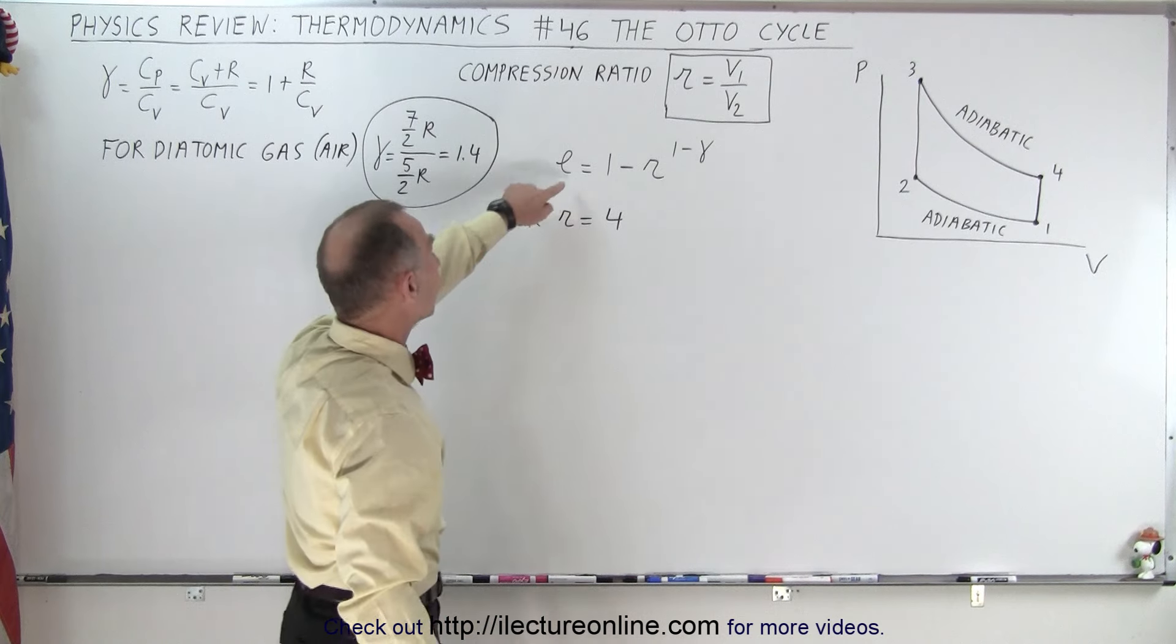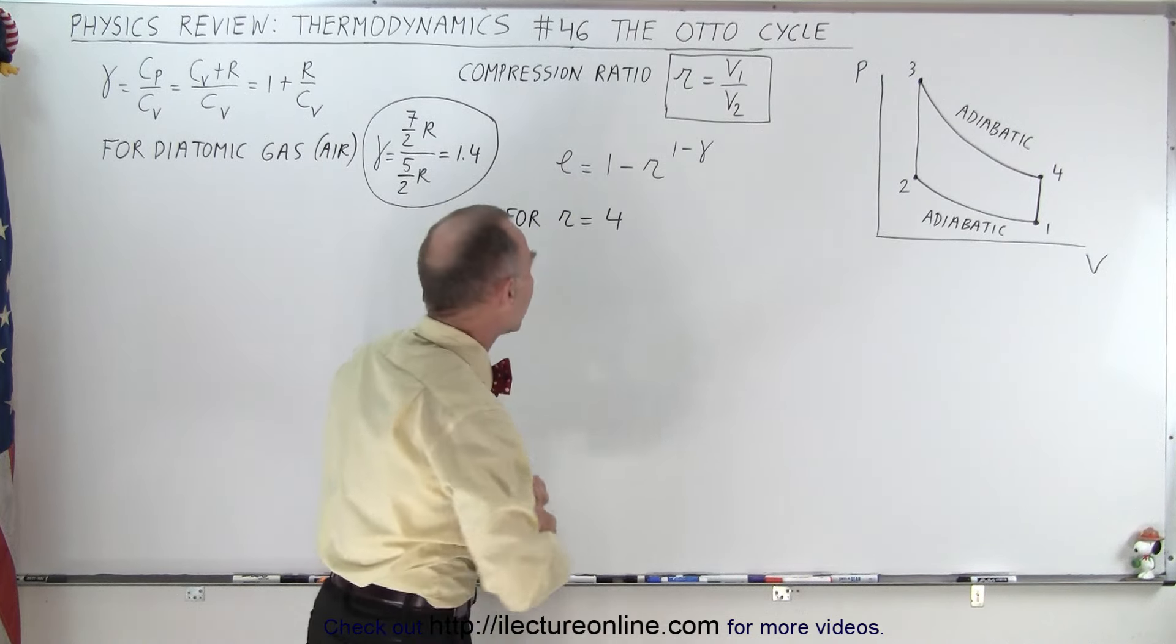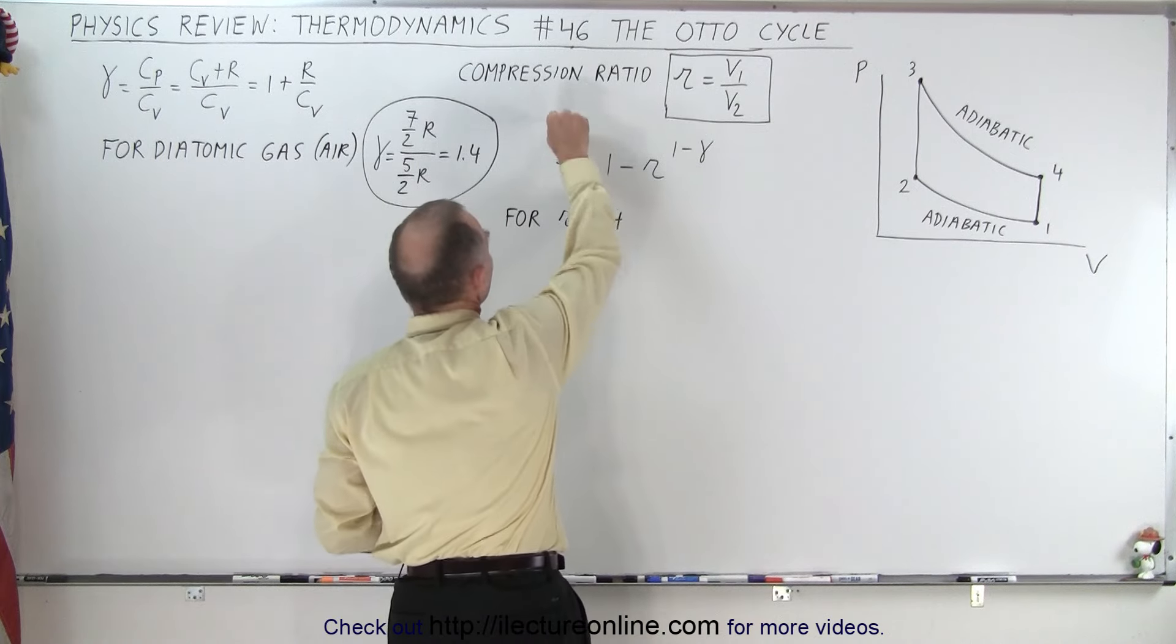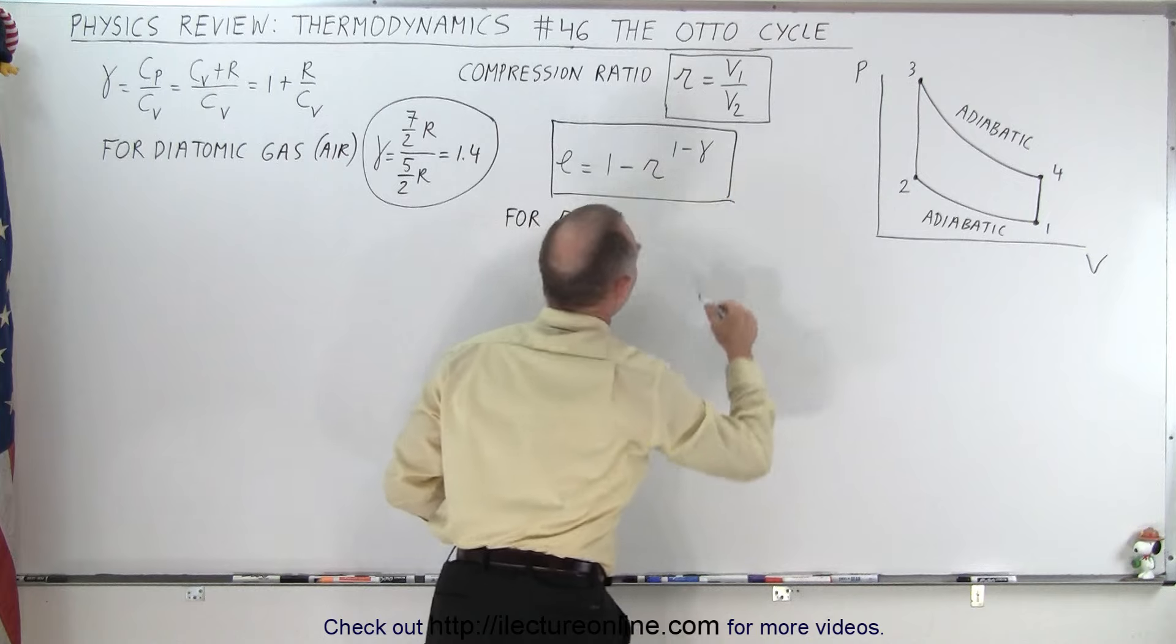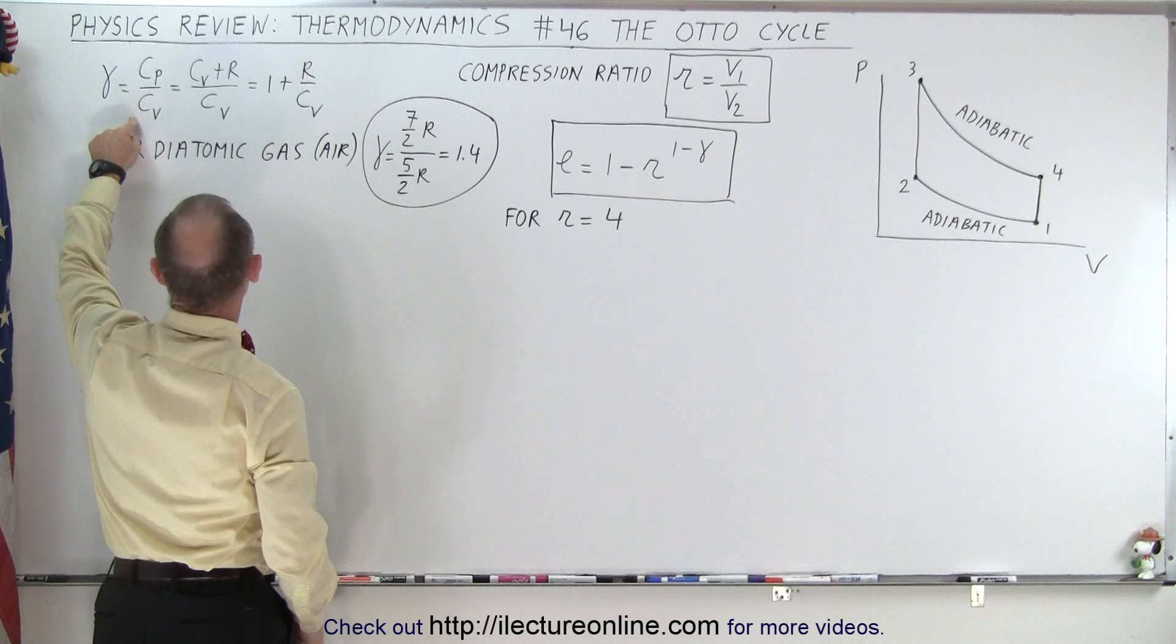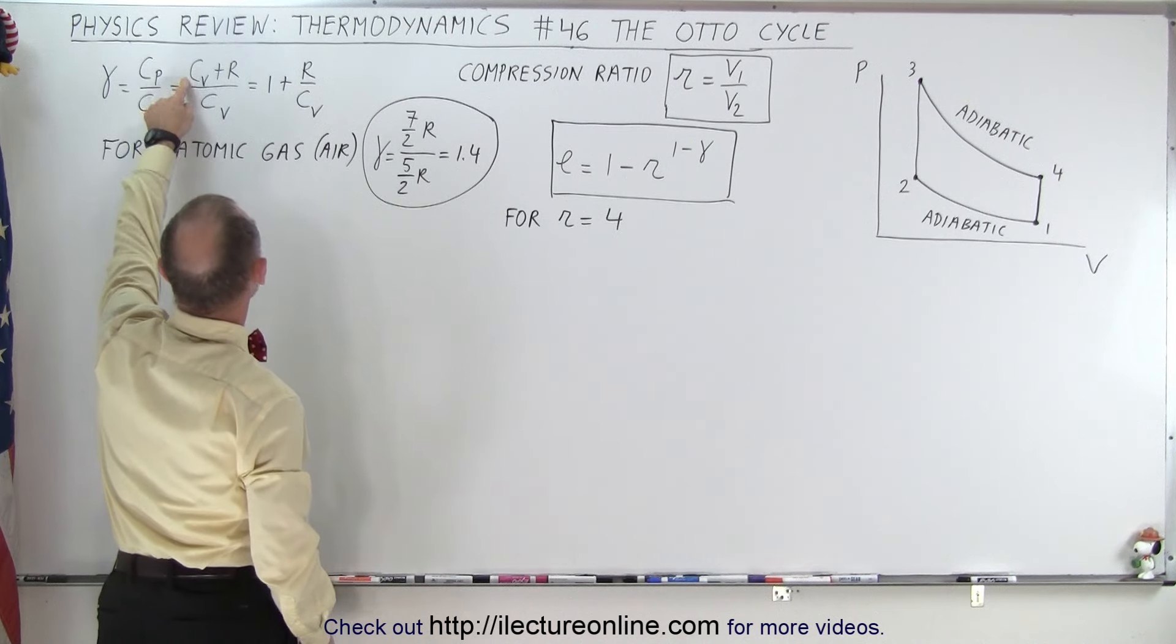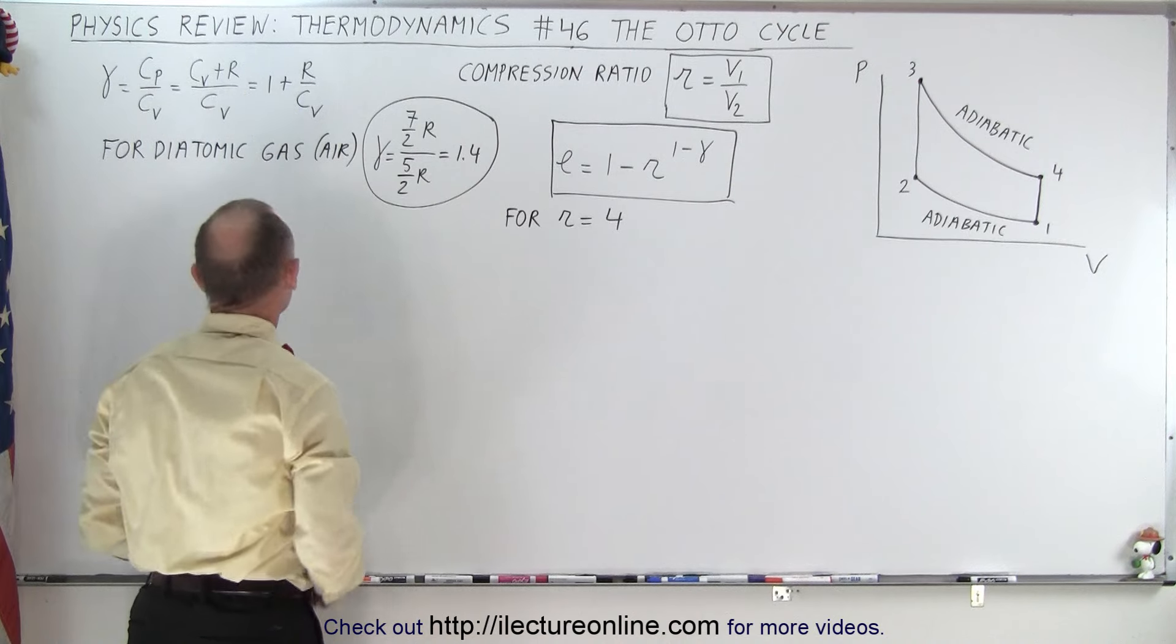So the efficiency of an Otto cycle is one minus r to the one minus gamma. We probably want to put that in a box. That's the equation for the efficiency of an Otto cycle. And of course we have to remember that gamma is the ratio of c sub p over c sub v, where c sub p is c sub v plus r, r being the gas constant.